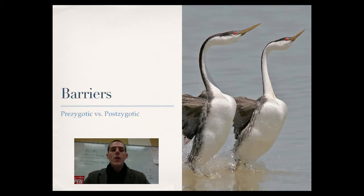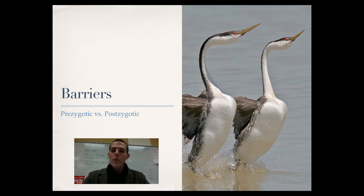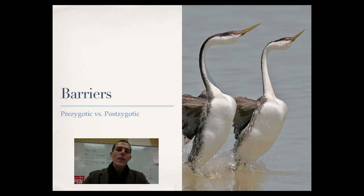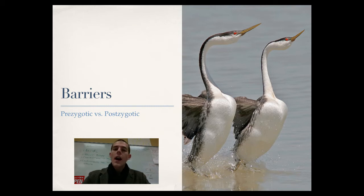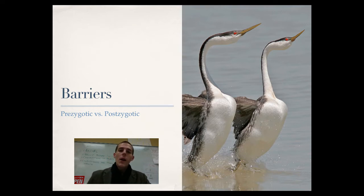There are two categories of reproductive barriers: pre-zygotic and post-zygotic. A zygote is formed when an egg and sperm combine. There are barriers that prevent that egg and sperm from forming a zygote, and barriers that prevent the resulting individual from reproducing. Pre-zygotic barriers prevent fertilization; post-zygotic barriers prevent the offspring from reproducing.